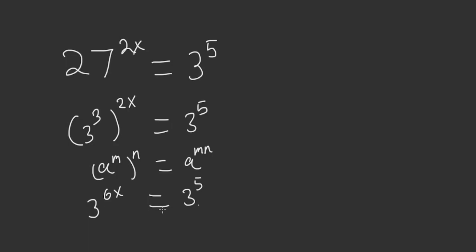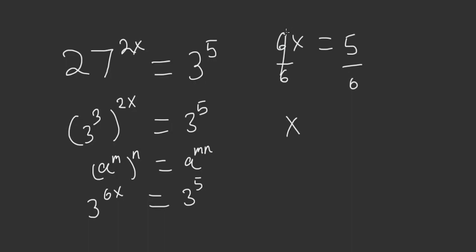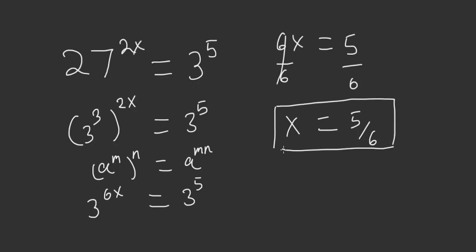Now that we have the bases equal to each other, we can set the exponents equal to each other. So we have 6x is equal to 5. Divide both sides by 6 and we get that x is equal to 5/6. And this here is the answer.